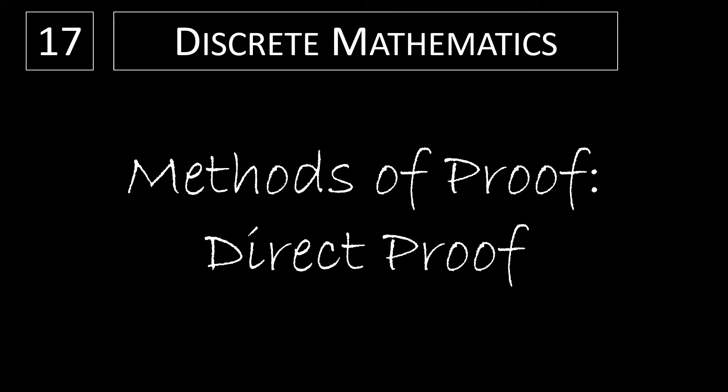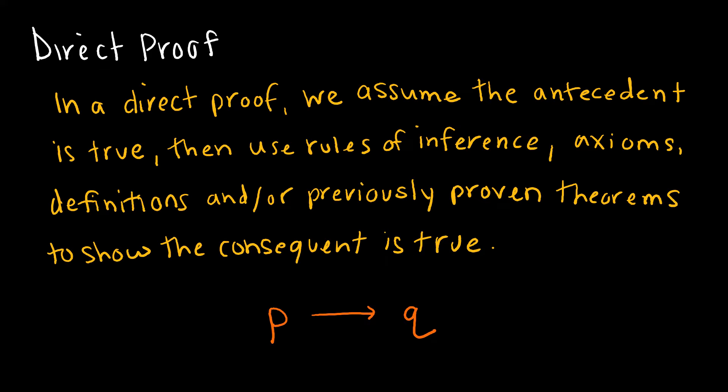In this video, we're going to take a look at a method of proof called direct proof. So in a direct proof, essentially we are just going to assume that the antecedent is true and then use the rules of inference, axioms, definitions, etc. to show that the consequence is true.